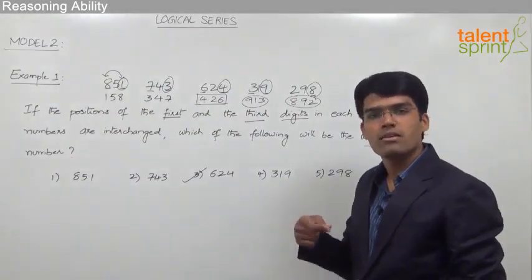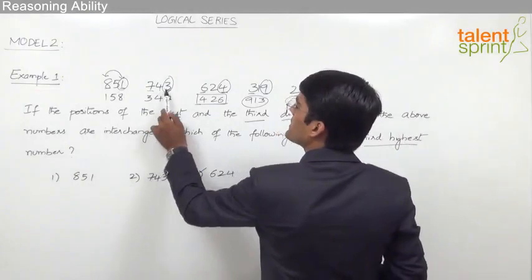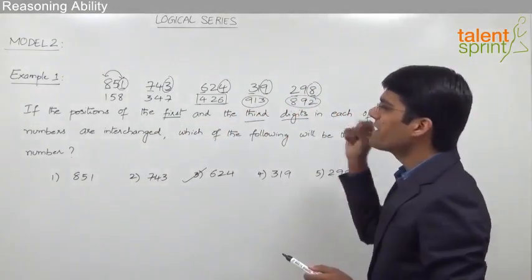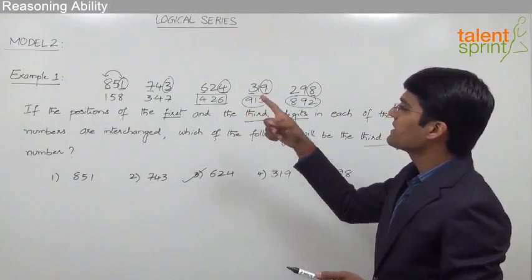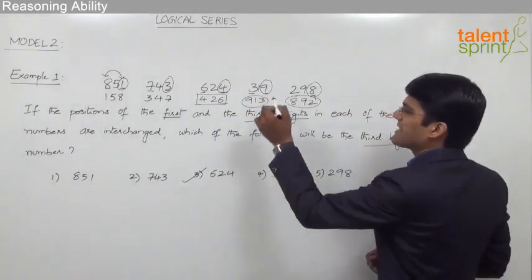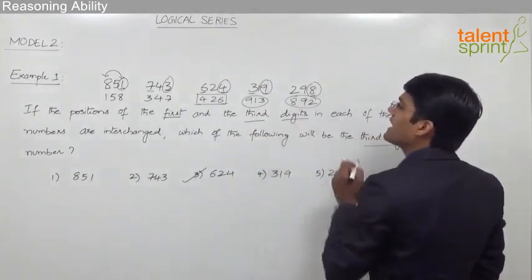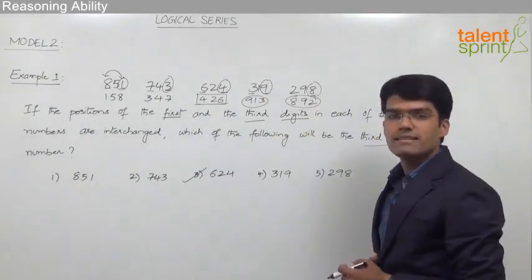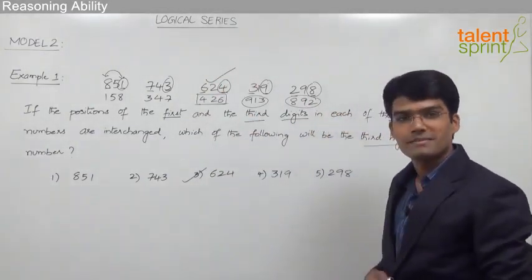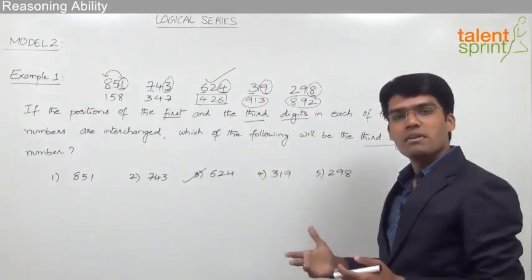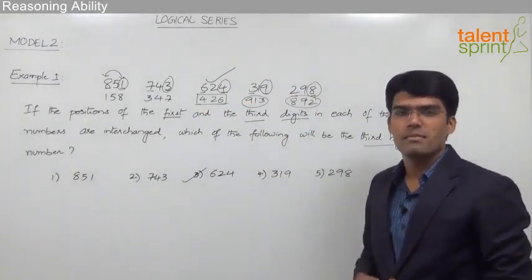Since a number's relative size is determined by its hundreds digit, out of the five units digits — 1, 3, 4, 9 and 8 — whichever is the third highest will result in the third highest number after interchanging. The first highest digit is 9, so 319 gives 913, the highest number. The second highest digit is 8, so 298 becomes the second highest. Since the third highest digit is 4, it is clear that 624 has to be the answer. Without writing new numbers, we can find the answer in a few seconds.